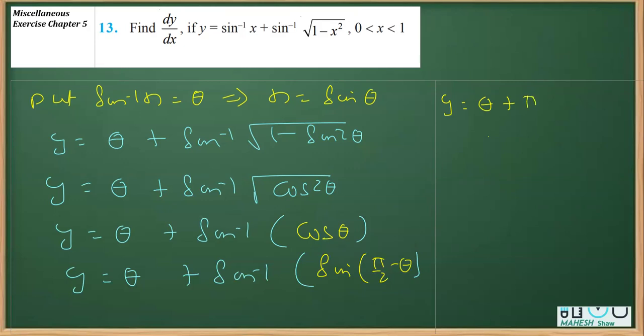Pi by 2 is pi by 2 minus theta. Clearly the theta get cancelled here, so we get y is equal to pi by 2. There is no variable, but this is constant, right? Pi by 2 is a constant.